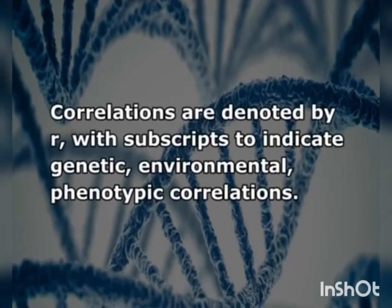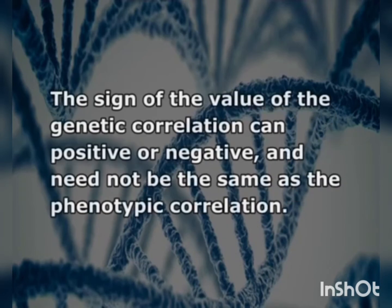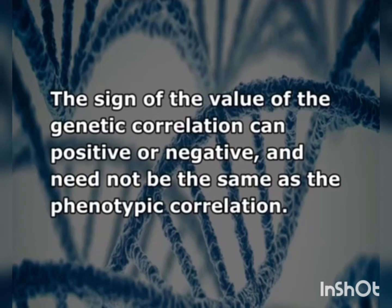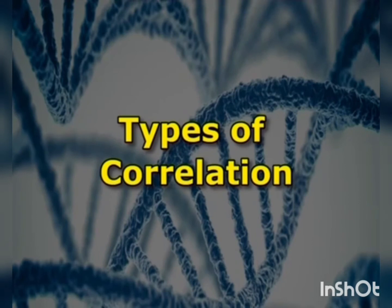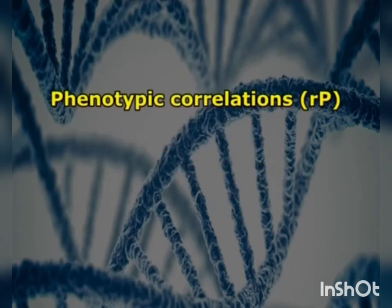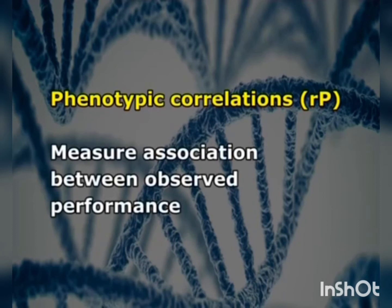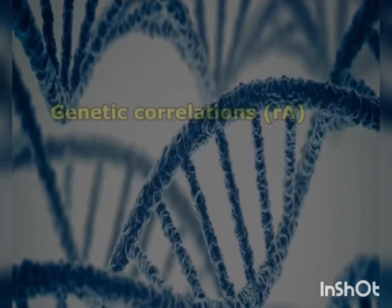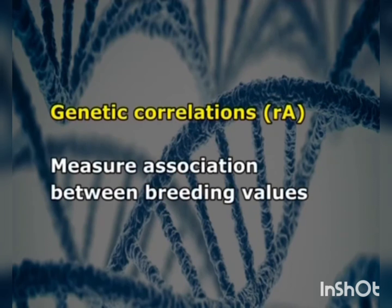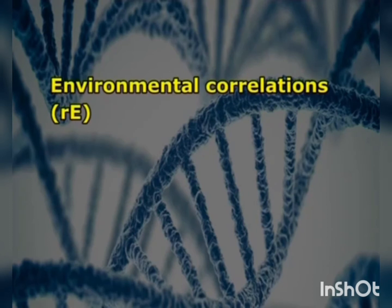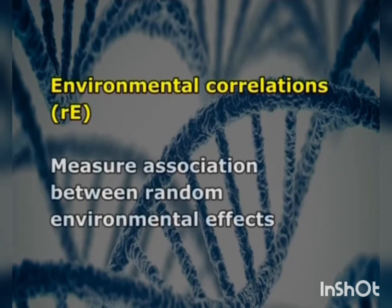Correlations are denoted by R with subscripts to indicate genetic, environmental, or phenotypic correlations. The sign of the genetic correlation can be positive or negative and need not be the same as the phenotypic correlation. The three types of correlation are: phenotypic correlation (RP), which measures association between observed performance; genetic correlation (RA), which measures association between breeding values; and environmental correlation (RE), which measures association between random environmental effects.